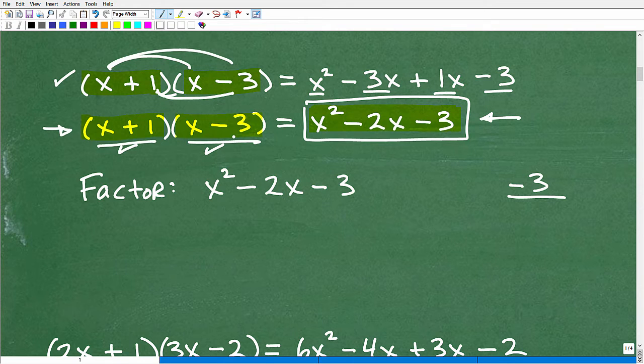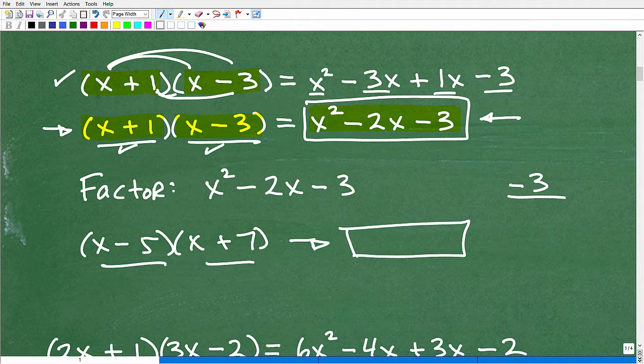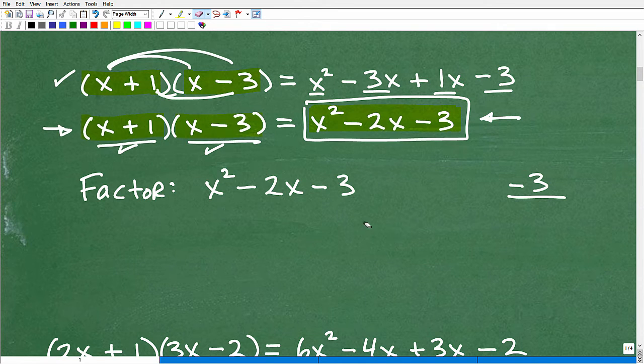You can make up any two simple binomials, and multiply them together. And you just made yourself a practice factoring problem. Because these guys here are the answer to the problem factor x squared minus 2x minus 3. If I told you to factor this, guess what? I already have the answers.